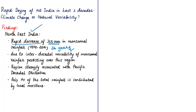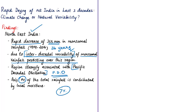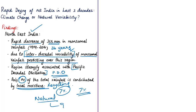This rapid drying of Northeast India is part of an interdecadal variability of monsoonal rainfall that persists over the region, which is strongly associated with the Pacific Decadal Oscillation. It was also found that only 7 percent of the total rainfall is contributed by local moisture. This means that natural reasons account for 93 percent of the rapid drying or fall in summer monsoonal rainfall received by Northeast India.